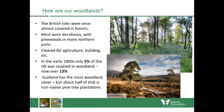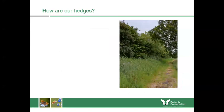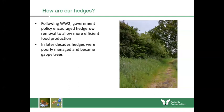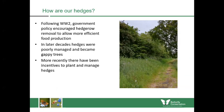Scotland has the most woodland in the UK, but again about half is non-native pine tree plantations. Our hedgerows aren't doing so great either — following World War II, government policy encouraged hedgerow removal to make food production more efficient, and in later decades hedges were often just abandoned and became poorly managed gappy trees. Hedges are essentially woodlands kept under control by annual cutting. More recently there have been incentives to plant and manage hedges, which is really important as hedgerows help wildlife move throughout the countryside and connect up different habitats.